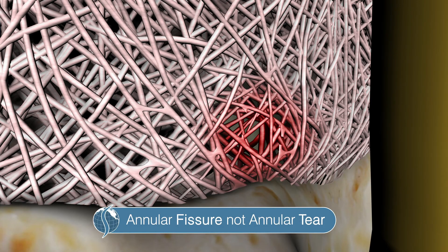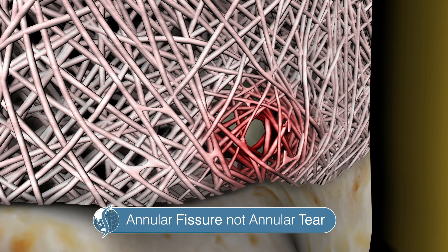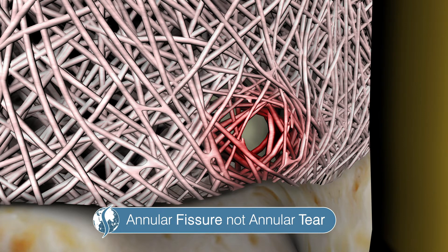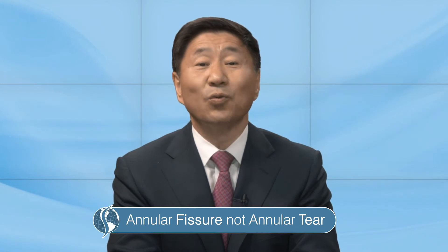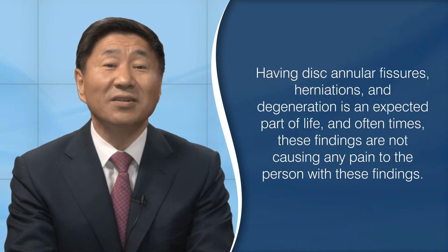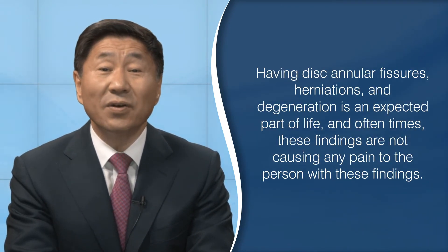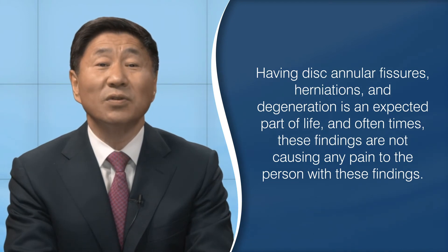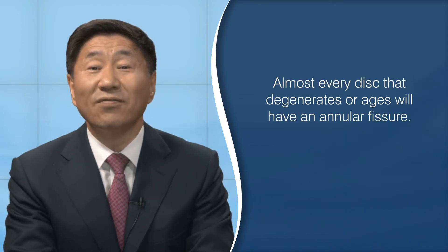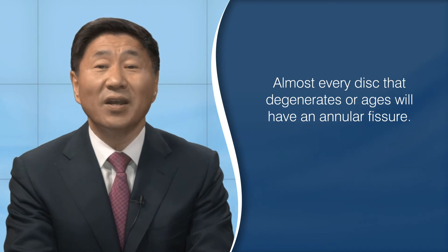In addition to the discussion about disc herniations and bulges, this paper establishes that breaks in the outside part of the disc, called the annulus, should be called fissures instead of tears. The term tear suggests a traumatic event, and it is well known that these annular disruptions can be a natural process not associated with any specific trauma. Since 1993, it's been established that having disc annular fissures, herniations, and degeneration is an expected part of life, and oftentimes these findings are not causing any pain to the person with these findings. The paper also mentions various research studies showing that almost every disc that degenerates or ages will also have an annular fissure.